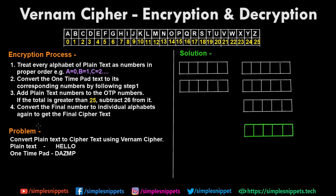We'll read the encryption process and then solve a problem. Step one: treat every alphabet of the plaintext as numbers in proper order — A is assigned 0, B is 1, and so on up to Z as 25. Step two: convert the one-time pad text to its corresponding numbers using the same method. This one-time pad is the secret key in the entire Vernam cipher process, and its size is equal to the plaintext. The number of characters in the OTP and plaintext are the same, and both sender and receiver must have this OTP for encryption and decryption.